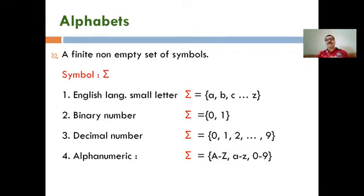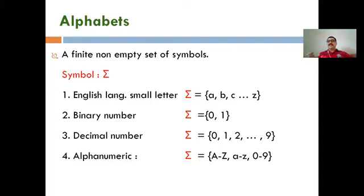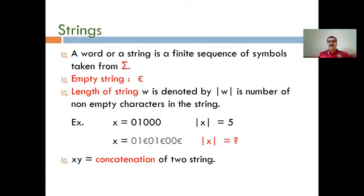Now for basic terminology: the alphabet is a finite non-empty set of symbols used as input. For example, in English the input alphabet is a to z. For binary numbers the alphabet is 0 and 1. For decimal numbers it is 0 to 9. For alphanumeric, it includes capital A to Z, small a to z, and 0 to 9.